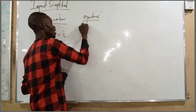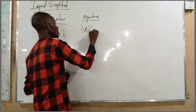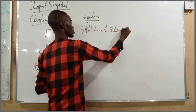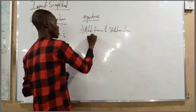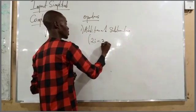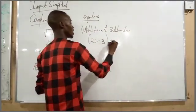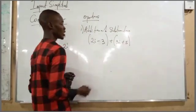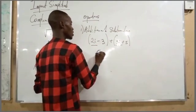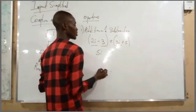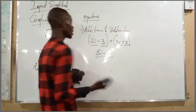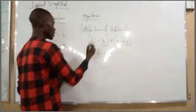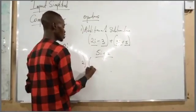The first operations we have are the addition and the subtraction of a complex number. For example, if we have something like 2i minus 3 plus 3i plus 5, we add the i terms: 2i plus 3i gives us 5i, and minus 3 plus 5 gives us 2. That is the addition and subtraction — it's simple.